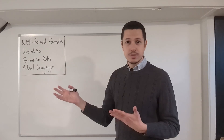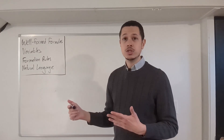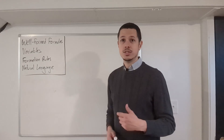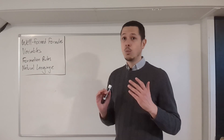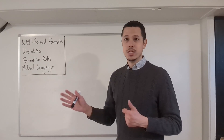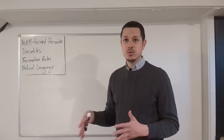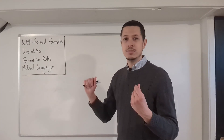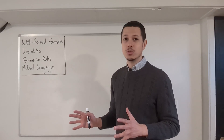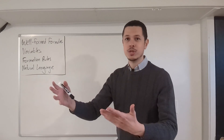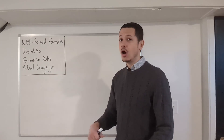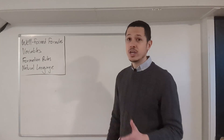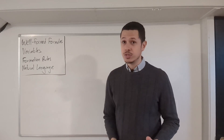The difference between natural language English and statement logic is that the rules in statement logic are far less forgiving. In English, it's okay if you misplace a comma — we'll still be able to understand what you're saying. But in sentence logic, you have to get the rules exactly right. You need to always make sure that the statements you've written out are written exactly the way they're supposed to be written, otherwise you won't be able to do anything with those statements.